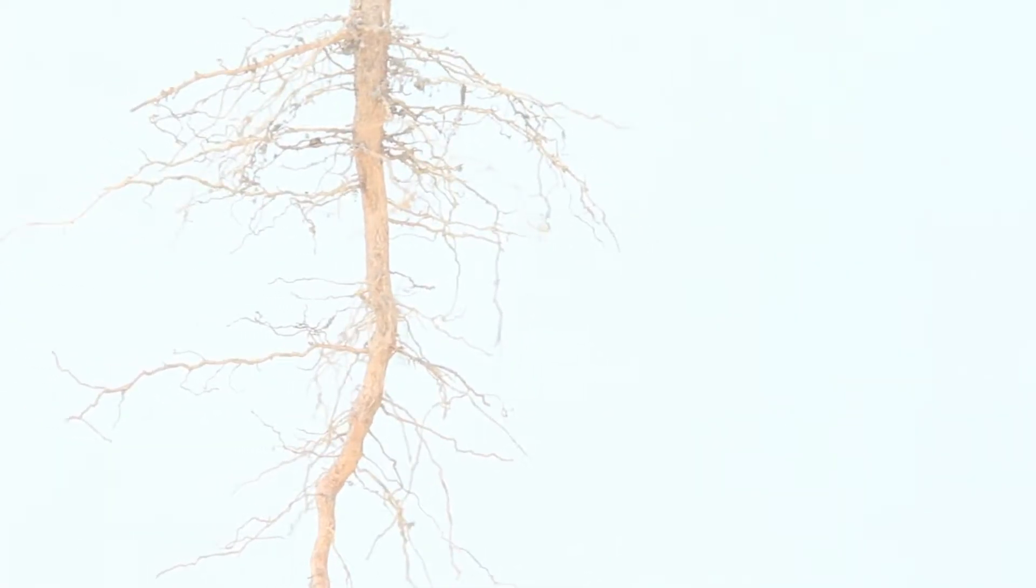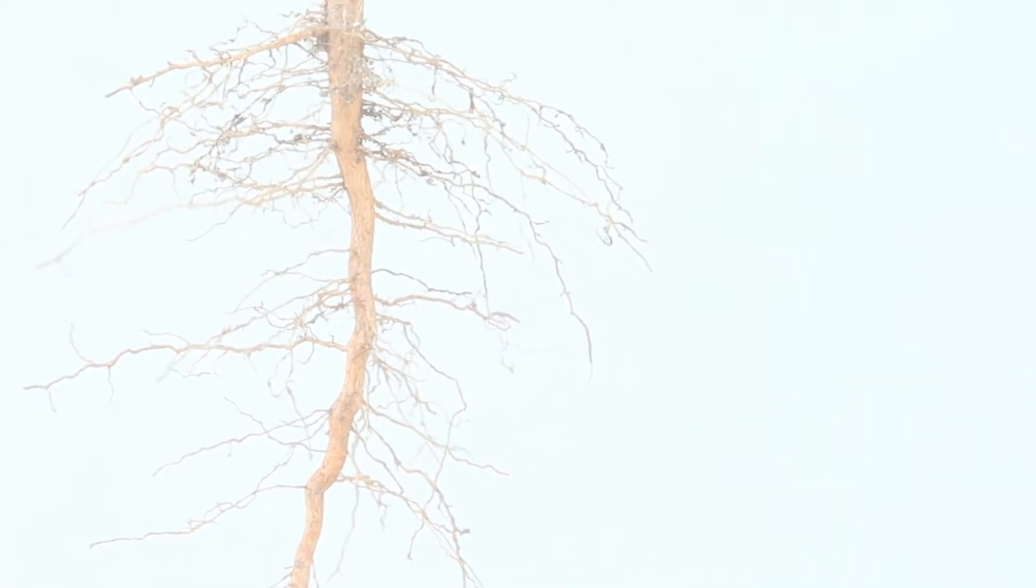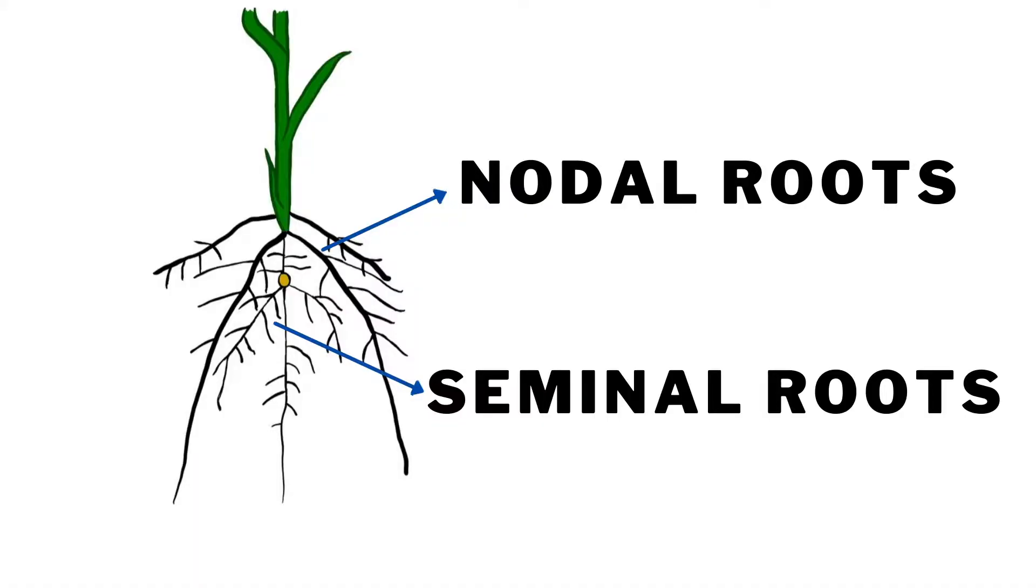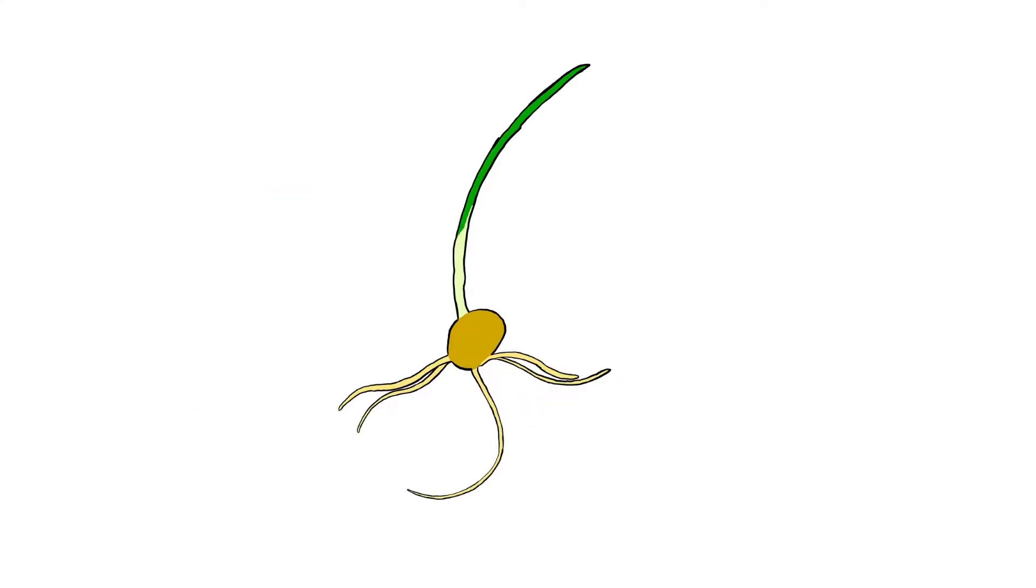A wheat plant typically has two types of roots: the seminal roots and the nodal roots. Let's talk about the seminal roots first. About six of the primary roots are present in the seed.